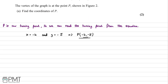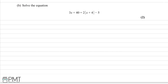There are two marks available here. We receive the first mark for getting either the x or y coordinate correct, and the second mark for the correct final answer. In this next part of the question we're asked to solve the equation 3x + 40 = 2|x+4| - 5.